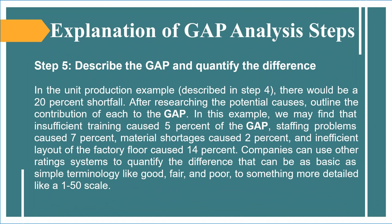Step 5 — Describe the gap and quantify the difference. In the unit production example from Step 4, there would be a 20% shortfall. After researching the potential causes, outline the contribution of each to the gap. In this example, insufficient training caused 5% of the gap, staffing problems caused 7%, material shortages caused 2%, and inefficient layout of the factory floor caused 14%. Companies can use rating systems ranging from simple terminology like good, fair, and poor, to something more detailed like a 1-to-50 scale.